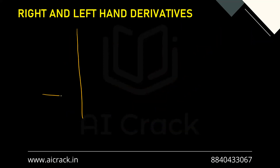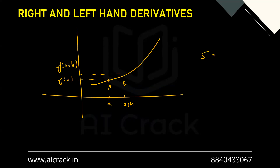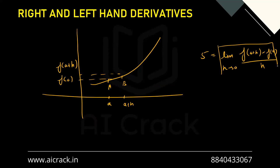Let's draw the curve again. Point A has x-coordinate a, and point B is very close at a + h. So f(B) = f(a + h). The slope is f(a+h) minus f(a) divided by (a+h) minus a, which simplifies to h. To find the limiting value, we apply limit h approaches zero, giving us the slope at a. This becomes our derivative formula.